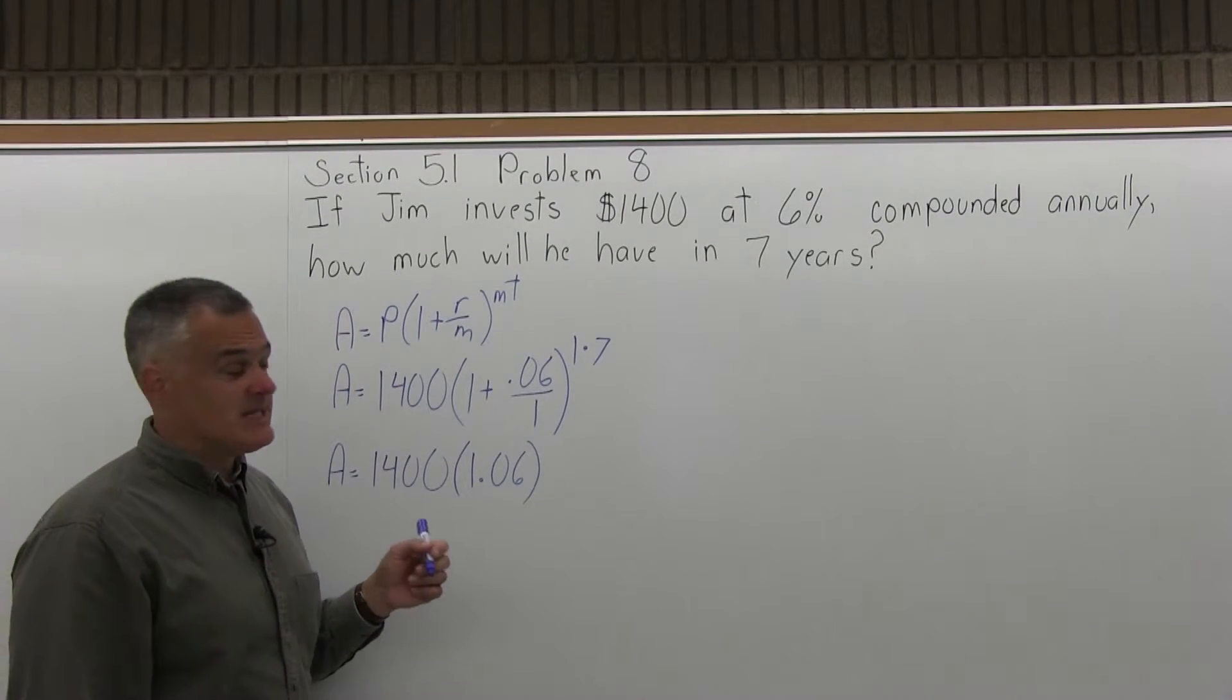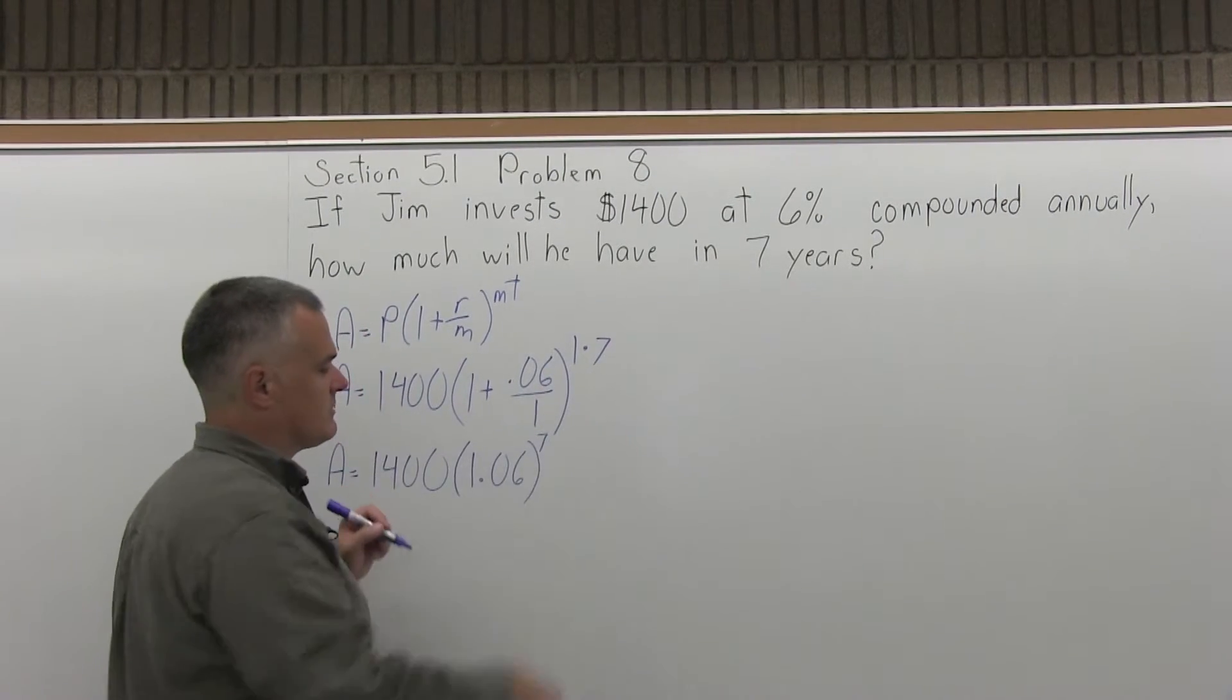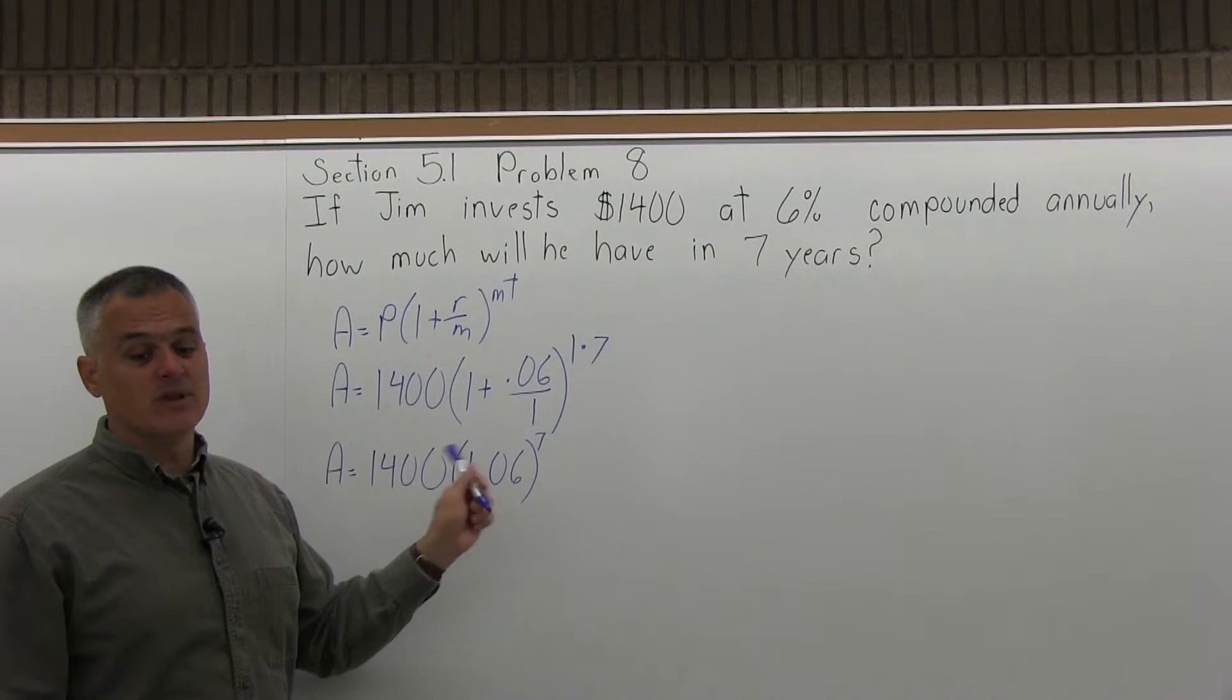Outside the parentheses, I have an exponent of 7. 1 times 7, of course, is 7. So now I have 1,400 times 1.06 to the 7th power.